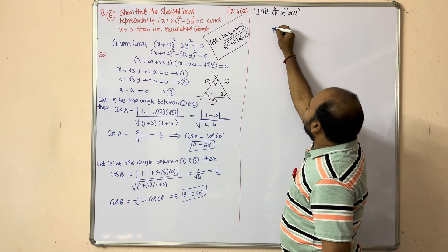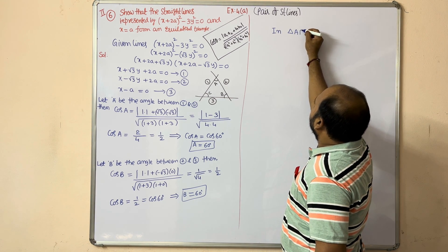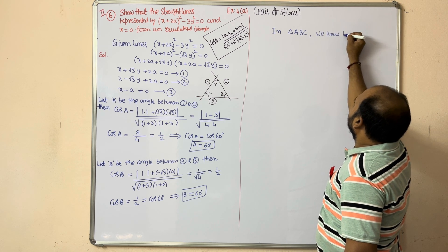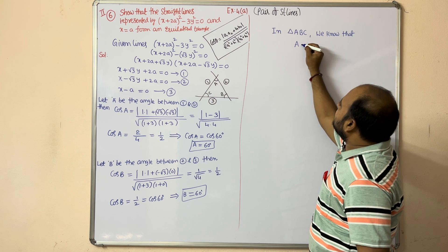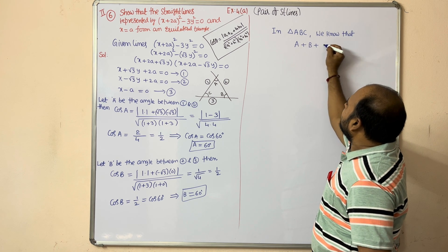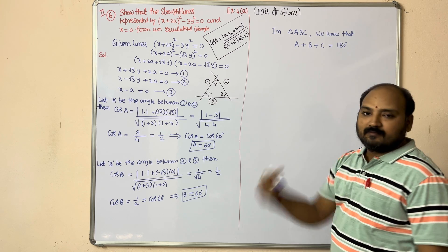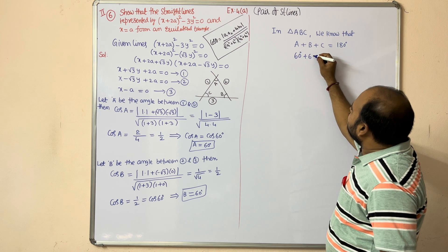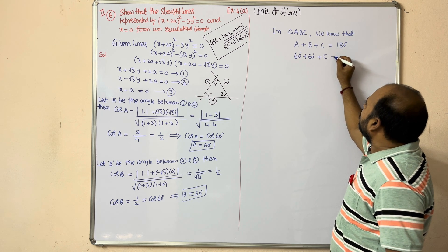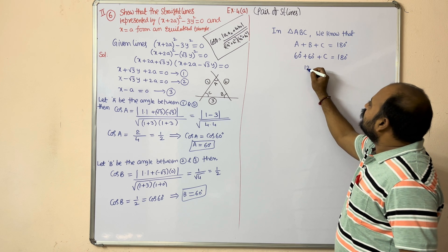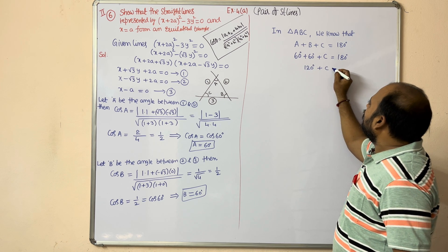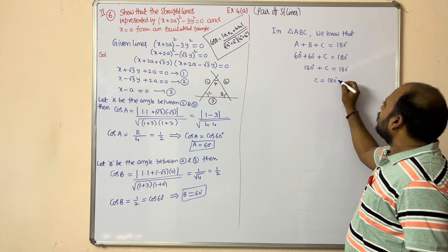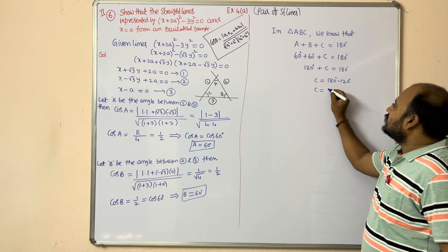In triangle ABC, we know that the sum of angles: angle A + angle B + angle C = 180°. Angle A = 60°, angle B = 60°, so 60° + 60° + C = 180°, giving 120° + C = 180°. Therefore C = 180° − 120° = 60°.